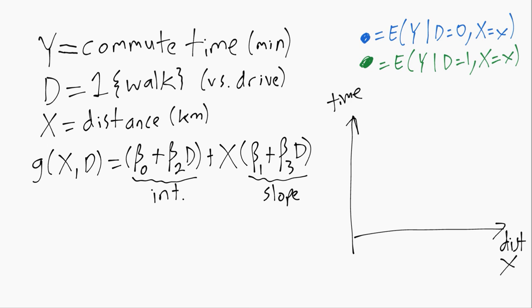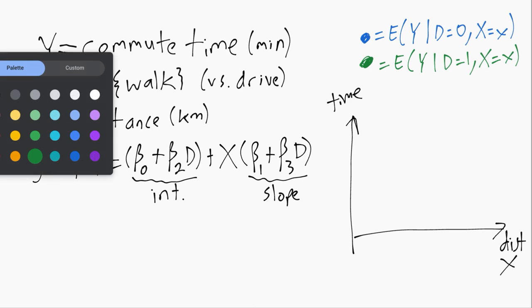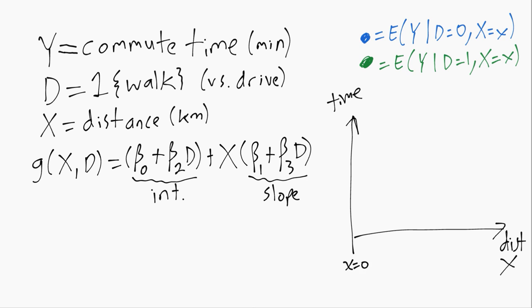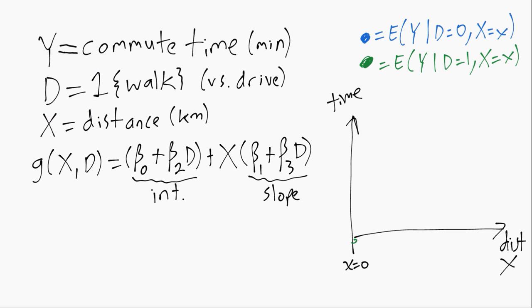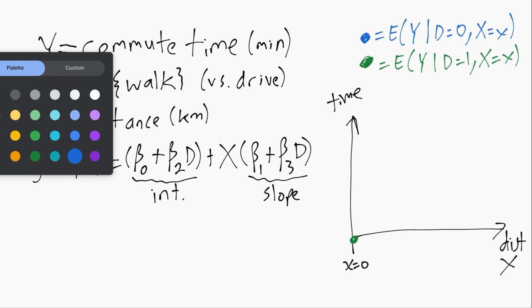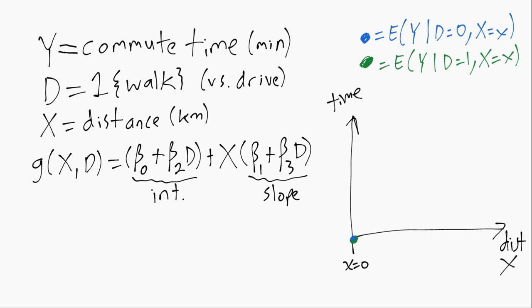So if we think about these conditional means first, if the distance is literally zero, then this is zero over here. If the distance is zero, then it doesn't matter whether you walk or you drive, you'll get zero either way.